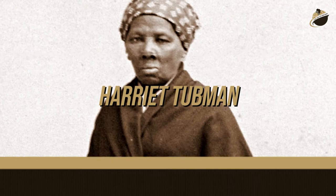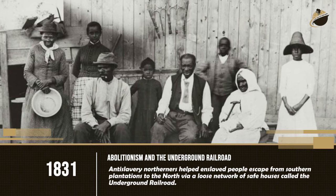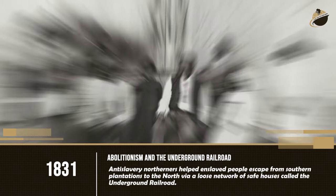1831 — Abolitionism and the Underground Railroad. Anti-slavery northerners helped enslaved people escape from southern plantations to the north via a loose network of safe houses called the Underground Railroad.